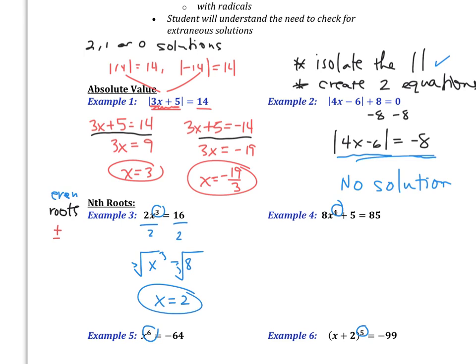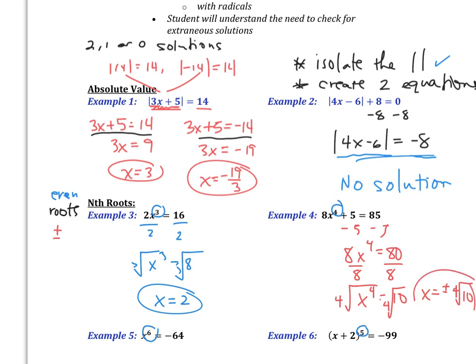In example four, I'm going to subtract 5 to get 8x to the fourth equal to 80. Divide by 8, and x to the fourth is equal to 10. Now I'm going to take the fourth root of both sides, and this time I have to remember that x is equal to plus or minus the fourth root of 10. There are only two solutions for example four, but remember there could have been potentially up to four.